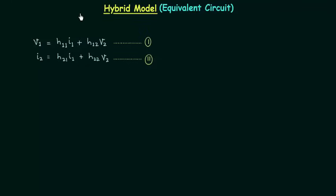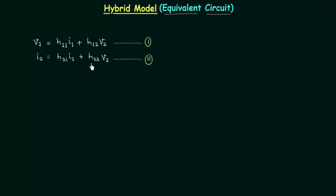In the last lecture we calculated the H parameters. Now we will draw the equivalent circuit using the two H parameter equations obtained in the last lecture. In the first equation, H11 is the input impedance and H12 is the reverse voltage gain. In the second equation, H21 is the forward current gain and H22 is the output admittance.